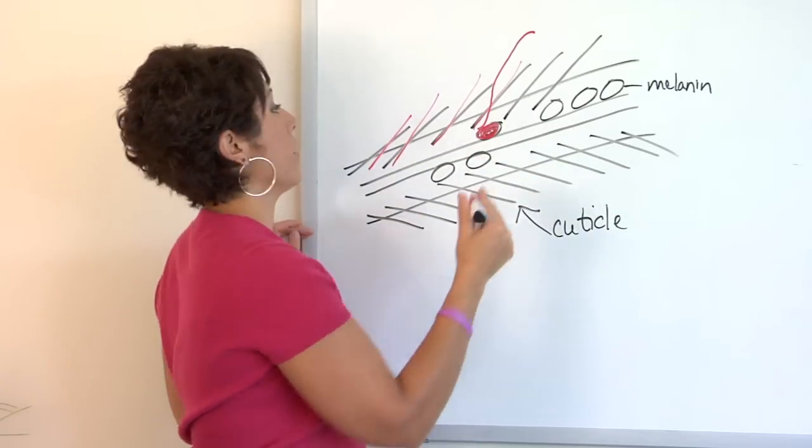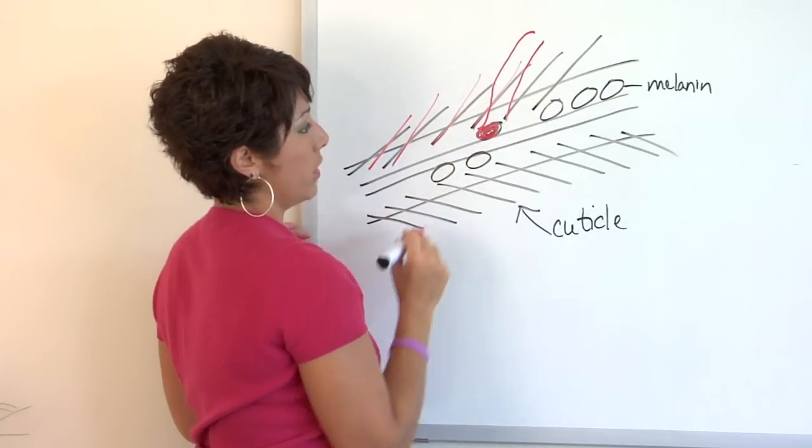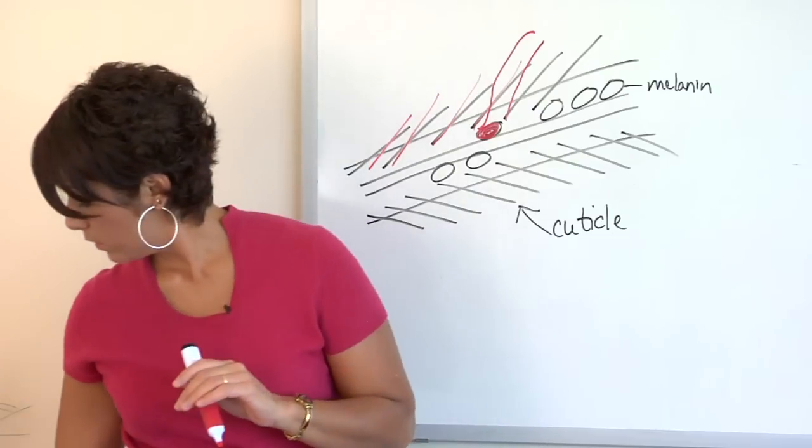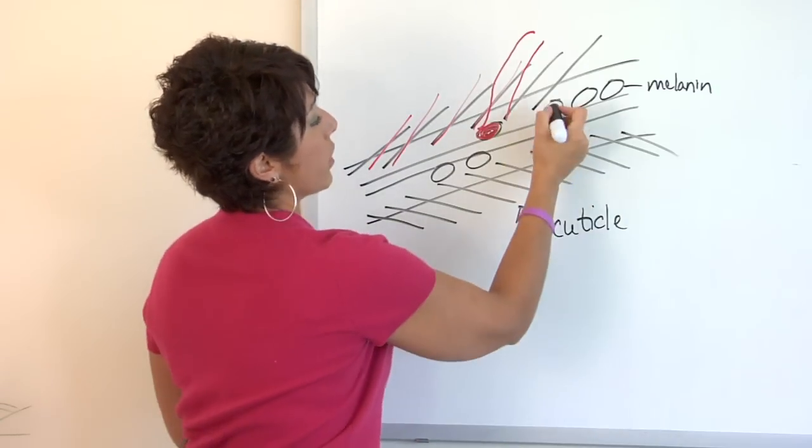If you are darkening the hair, then the color goes in and just darkens the melanin.